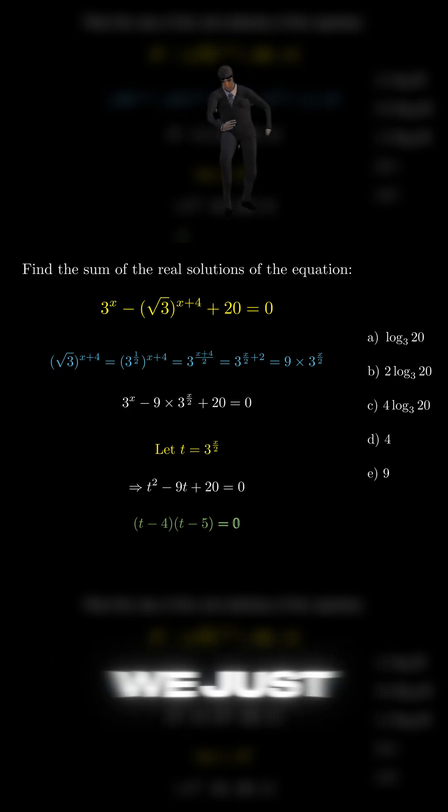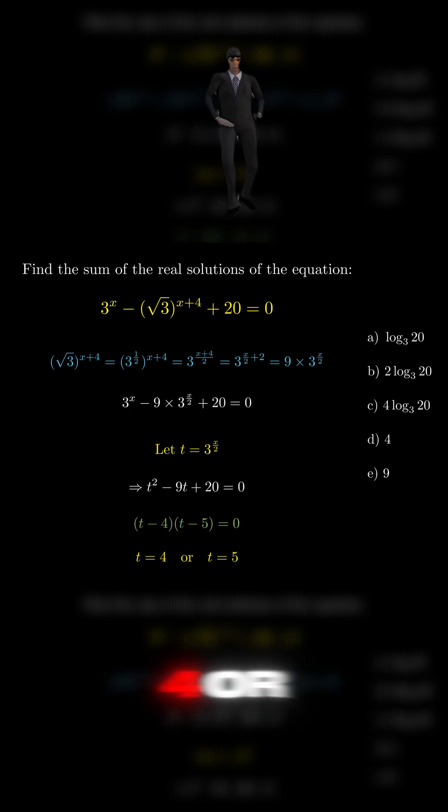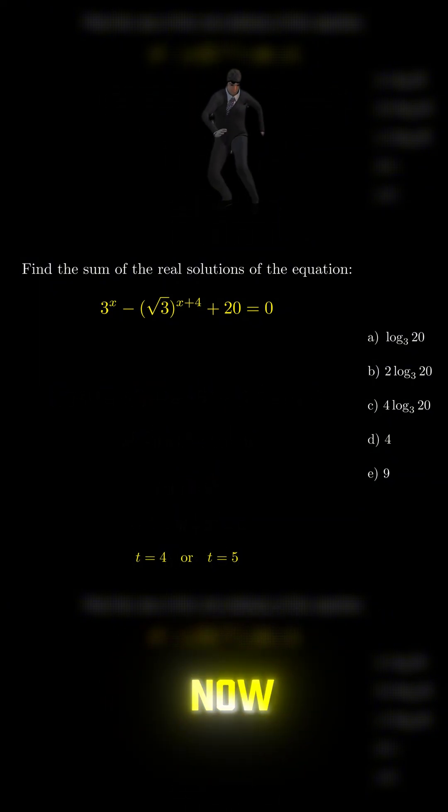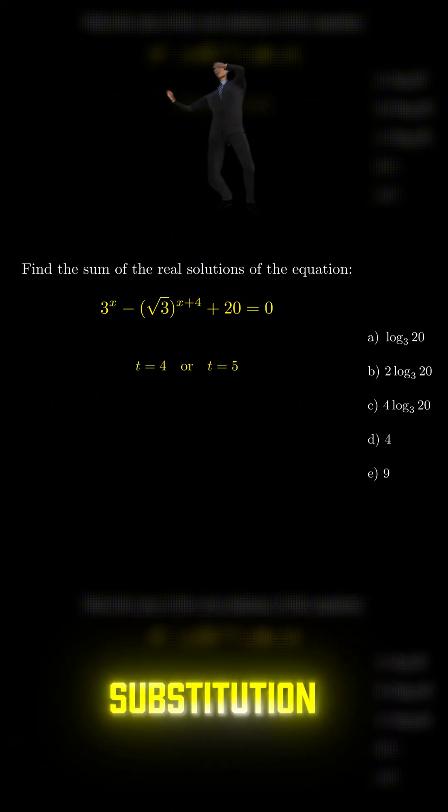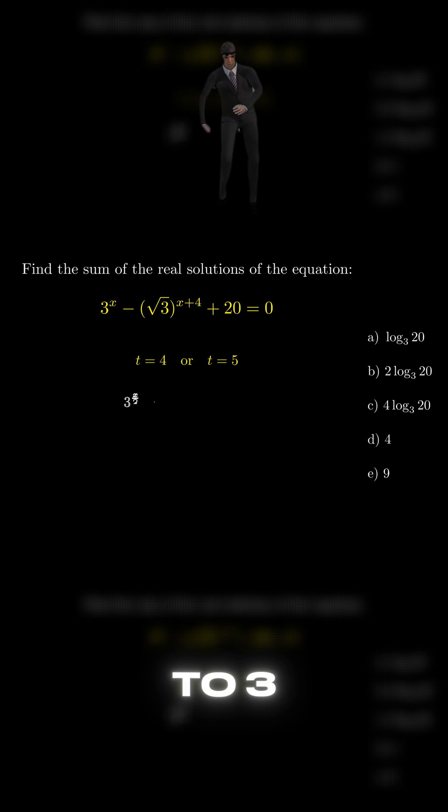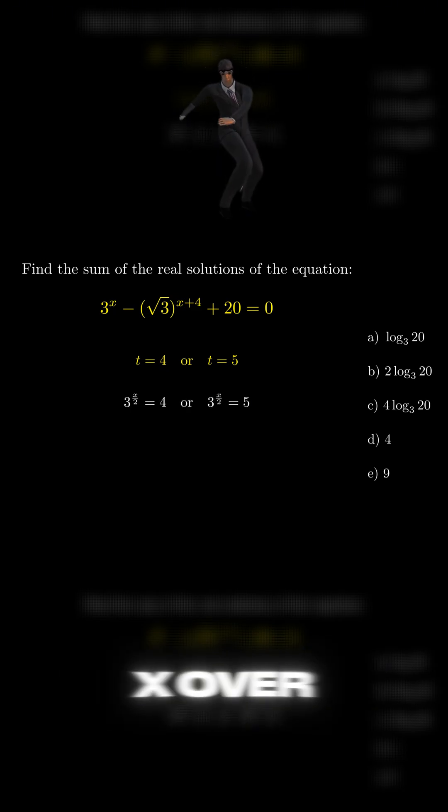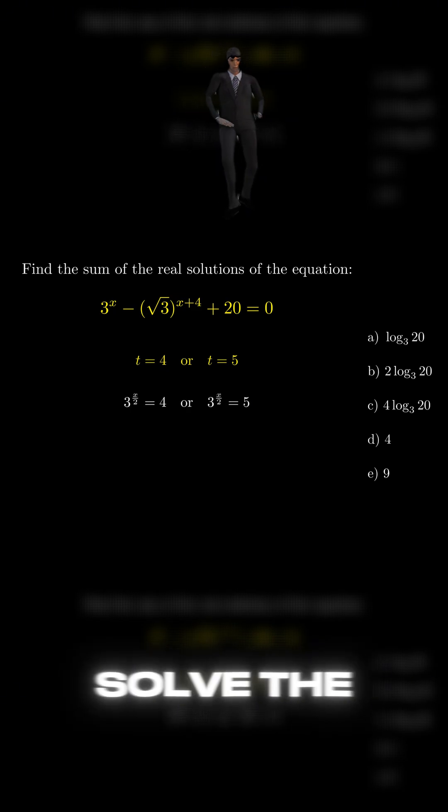After that, we just need to solve the quadratic and t should be equal to 4 or 5. Now we return to our substitution. Since t is equal to 3 to the power of x over 2, we now solve the two equations.